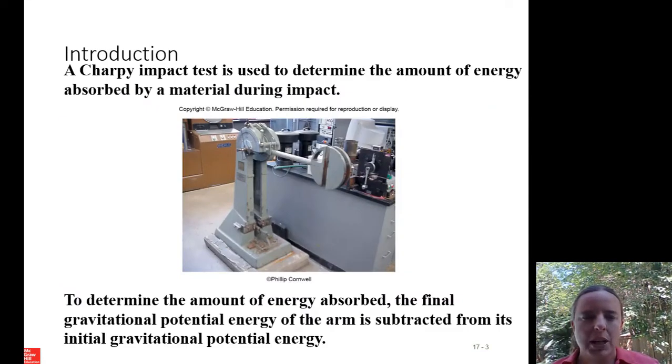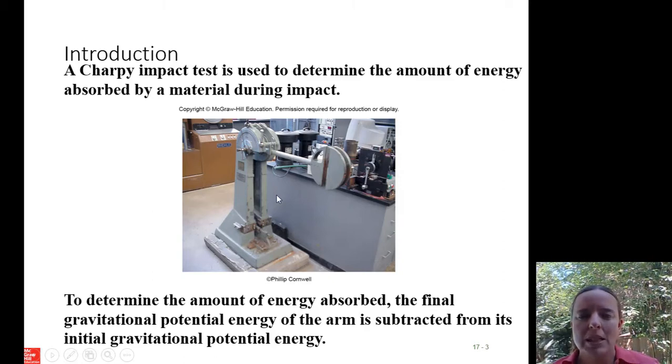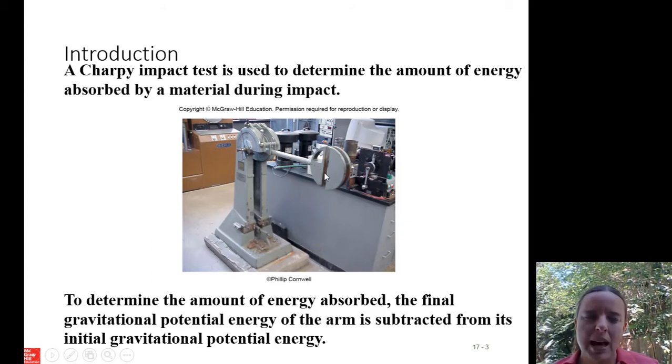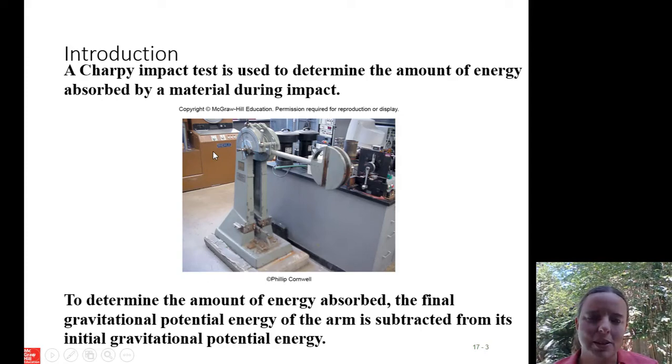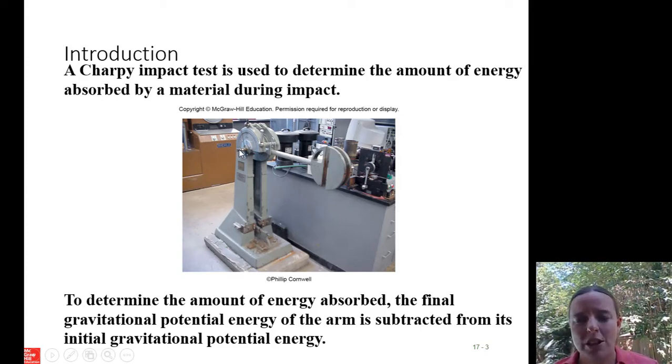Here's an example for an application. This is a Charpy impact test for materials testing. You load a piece of material down here at the base and you have this very heavy pendulum that you calibrate. If you let it go and it swings back up, theoretically if there's no friction it would swing back up to the same height. There's a little bit of frictional losses, so that's the calibration.